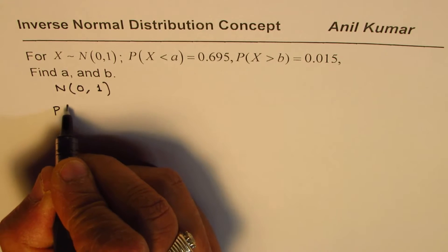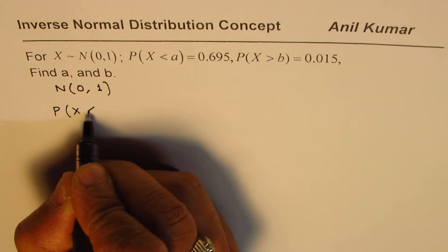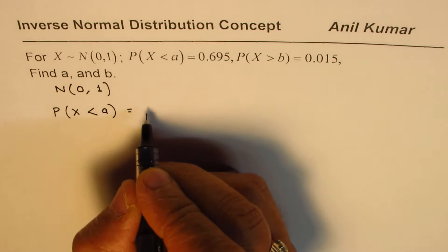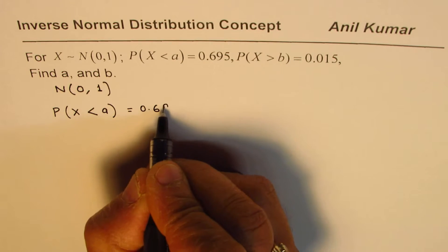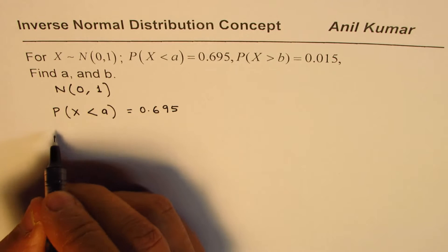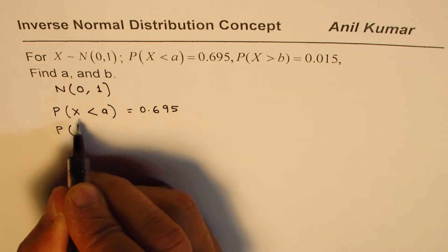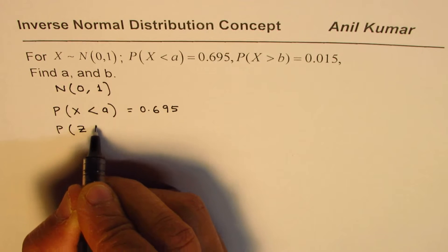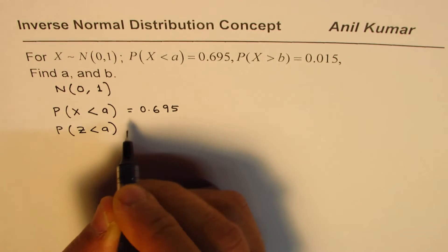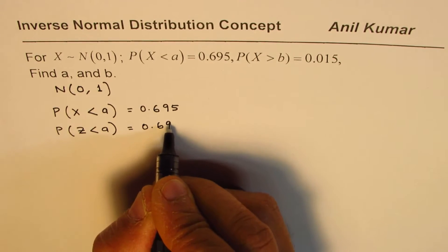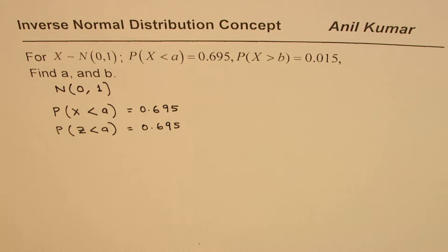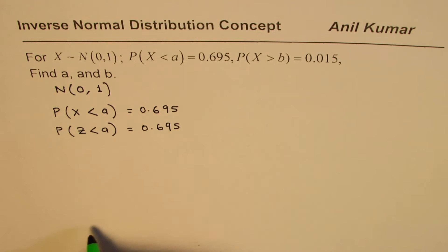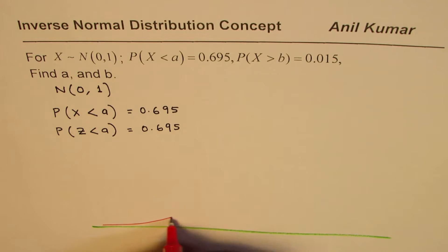When we are seeing that probability for the random variable to be less than a is given to us as 0.695, since it is a normal distribution, it is as good as writing that as a z-score. So that means z-score is less than a, which is 0.695. So 0.695 is a value which is on the right side. Just to give you a perspective here, let us say we have a normal graph kind of like this.